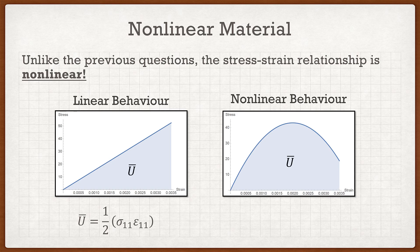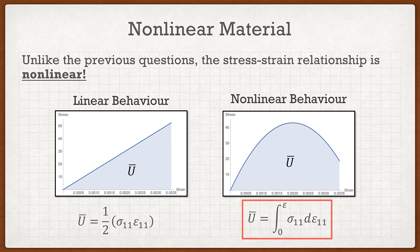So how do we deal with nonlinear problems? We integrate. The strain energy density is the area under the stress-strain curve, and that's exactly the definition of integration. For Parts B and C, we integrate sigma_11 with respect to epsilon_11 from 0 to the strain of interest. The only thing that changes between Part B and Part C is the upper limit of integration: Part B integrates from 0 to 0.002, and Part C integrates from 0 to 0.0035. Since you'll be using Mathematica, it's straightforward to integrate this function.